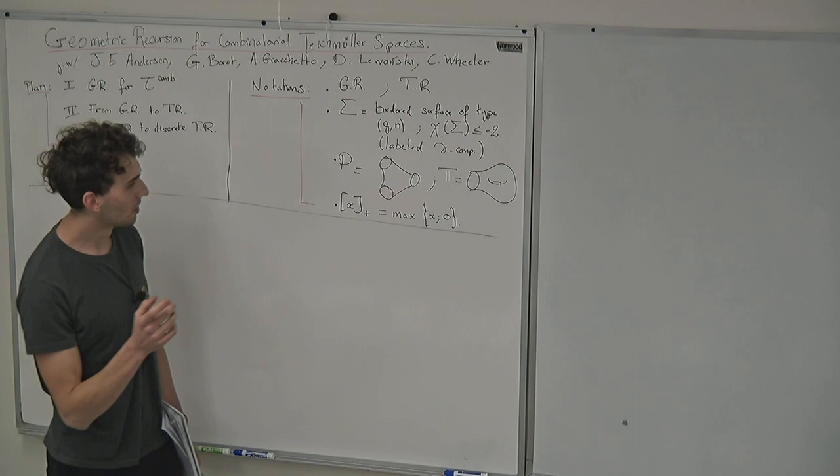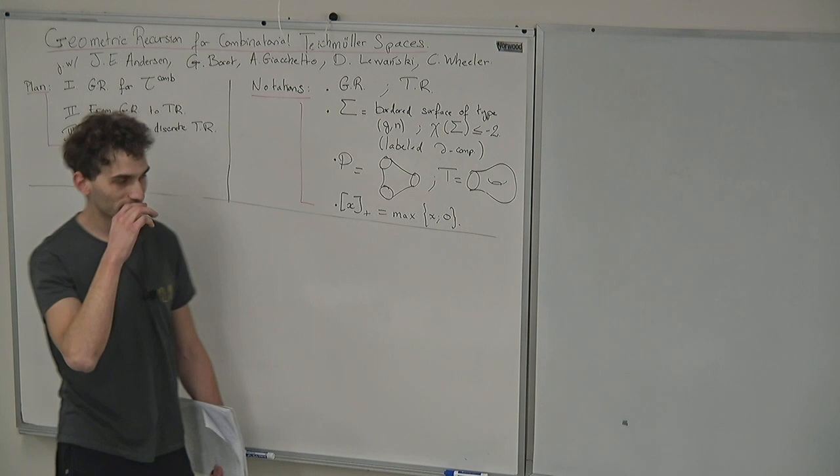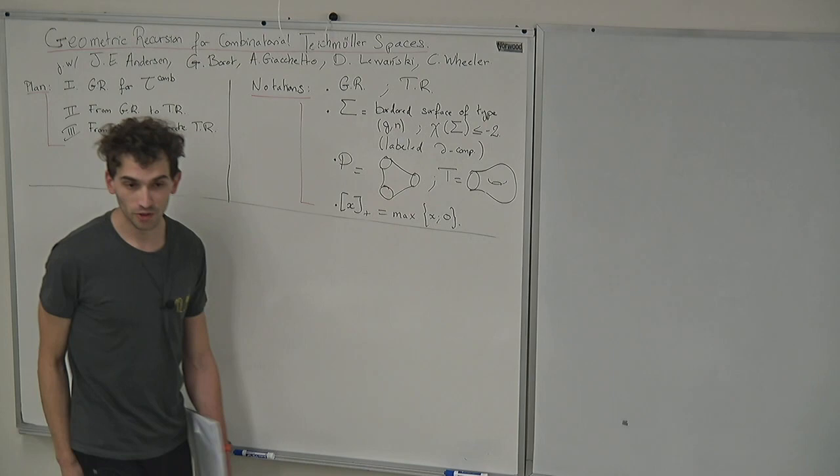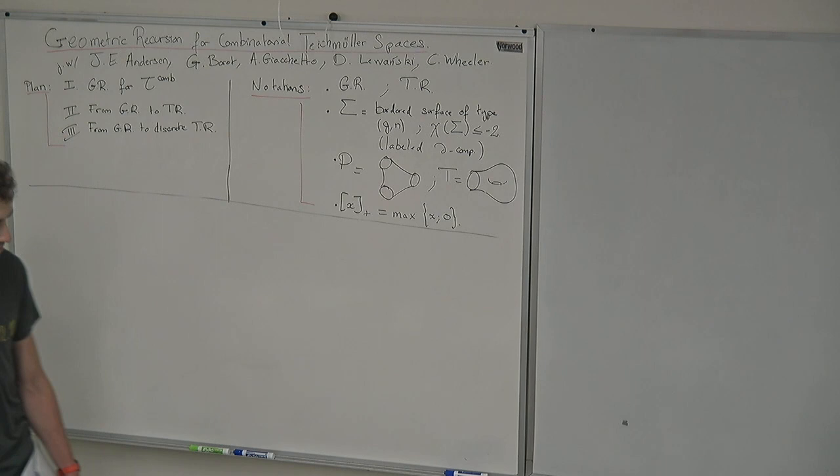Sigma will be a bordered surface of type (g,n). I exclude the pair of pants and the one-hole torus, so it's a stable surface of Euler characteristic less than minus 2, with labeled boundary components. P will denote a pair of pants and T will denote the one-hole torus. Also, the notation introduced by Jorgen this morning: x-plus is equal to x if x is positive and 0 otherwise.